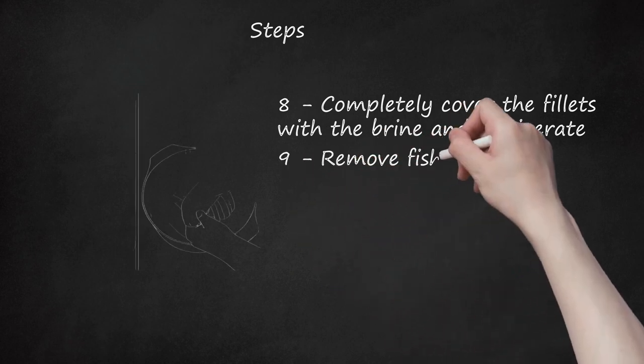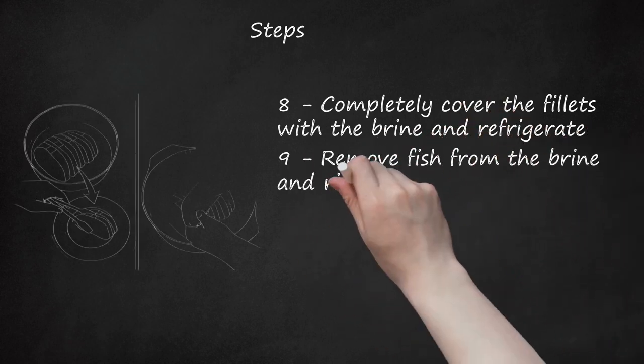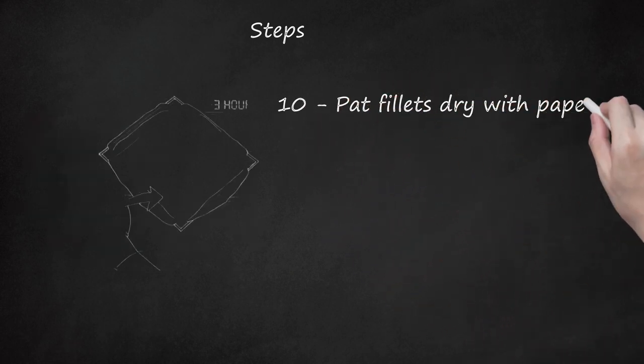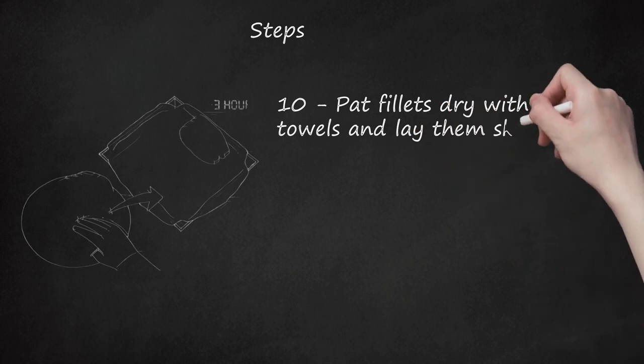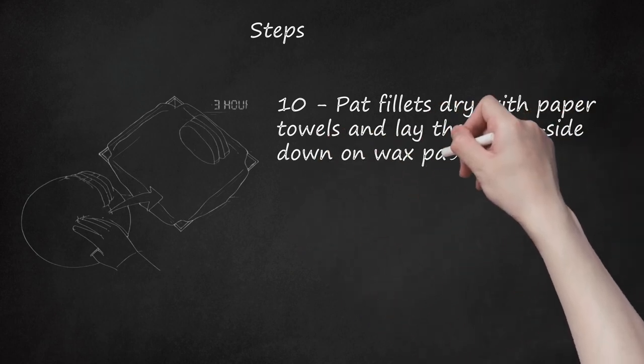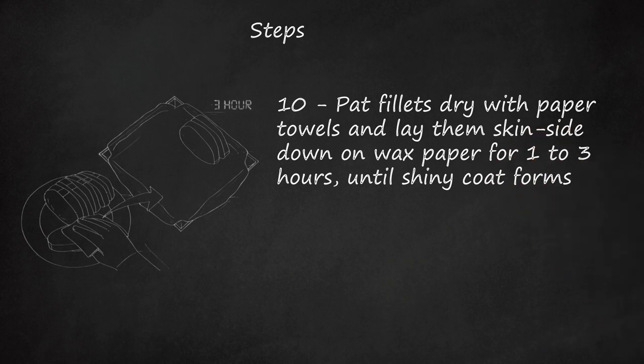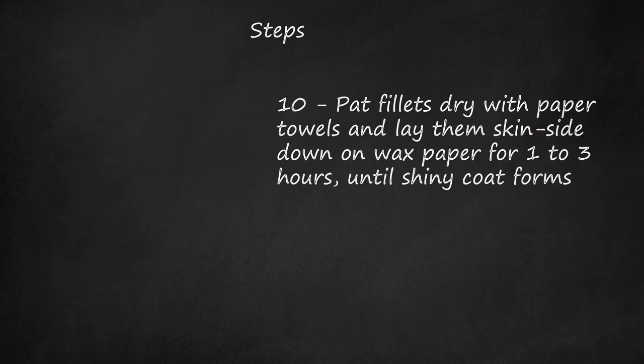Step 9: Remove fish from the brine and rinse in cold water. Step 10: Pat fillets dry with paper towels and lay them skin side down on wax paper for 1 to 3 hours until a shiny coat forms. A low-speed fan can help the drying process.